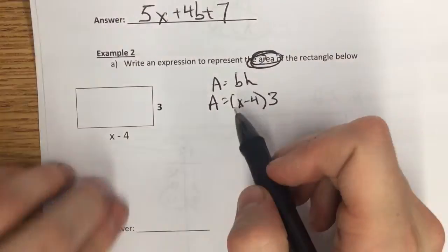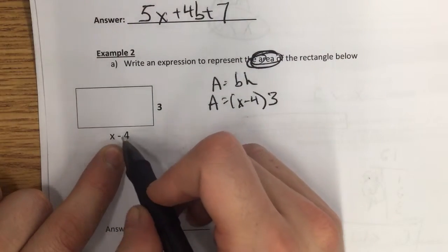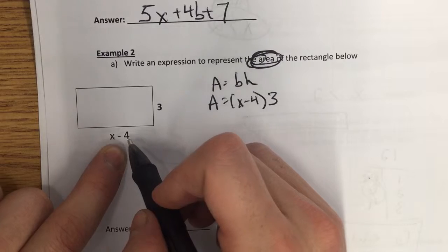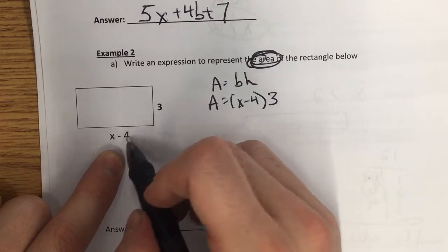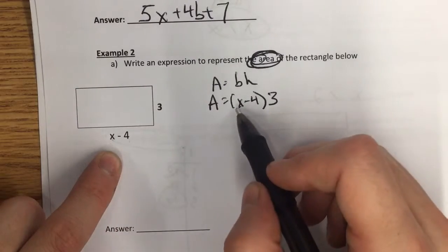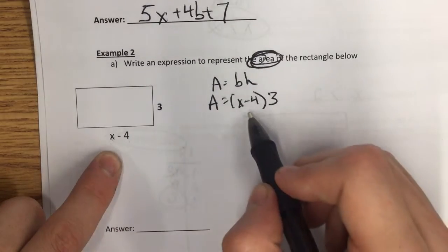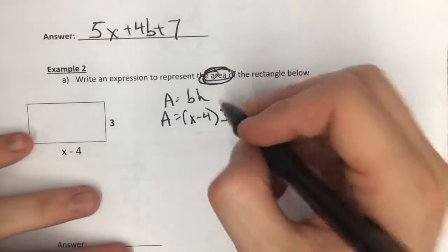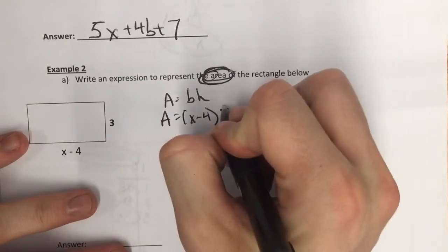A couple things to notice. If I ever have an expression like x minus 4, I always put that in parentheses. So when I'm multiplying, I want to multiply the whole base. So this is why x minus 4 is in parentheses.